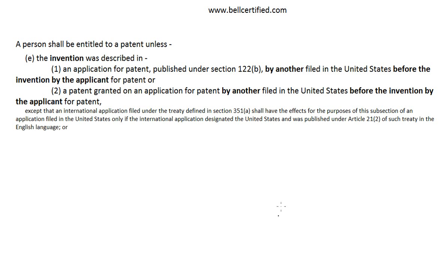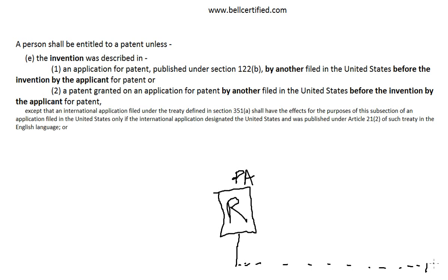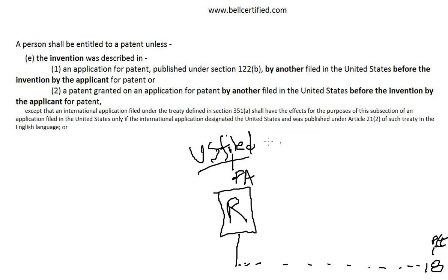102E provides an additional benefit: you're entitled to the earlier filing date of the reference as a prior art date. That's often earlier because a reference that's filed typically doesn't publish for 18 months and often doesn't issue for even longer. Under 102A, we would have been entitled to the later publication or issue date. What 102E does is allow us to get back to the U.S. filing date of the reference.